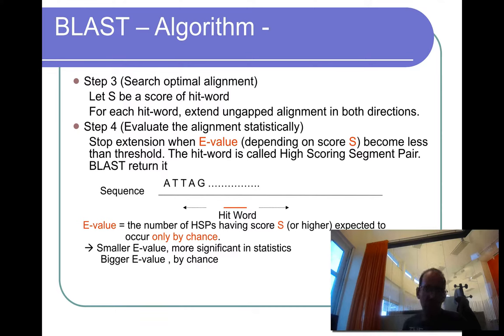If it's 10 to minus 50, you will run 10 to 50 pairs before you find one such pair randomly. If it's 10, you will find 10 in a random database. So you want to have a low E-value.